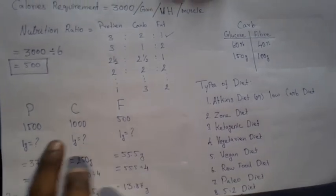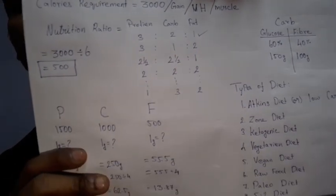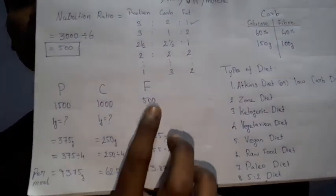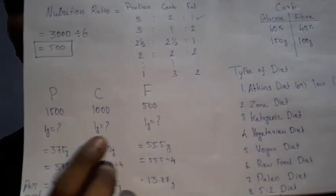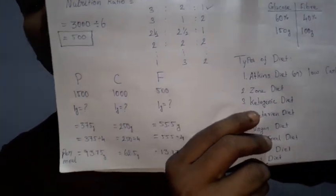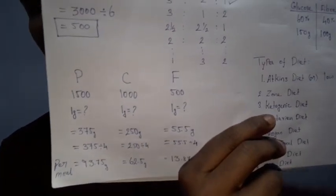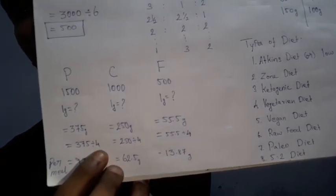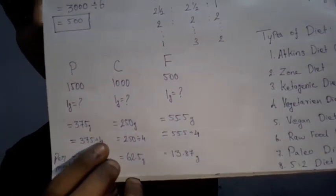I would like to add macro nutrition. That is protein, carb, and fat. Now let's take a look at that. If we eat a meal, we eat 2-3 meals. If we eat 4 meals, we eat a meal for 4 meals. If we eat 4 meals, 140 grams of protein.